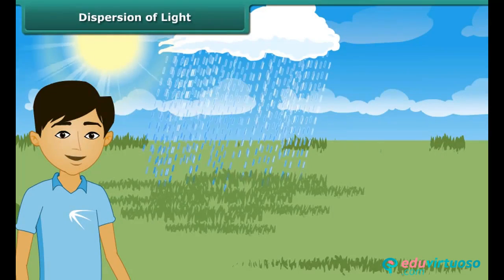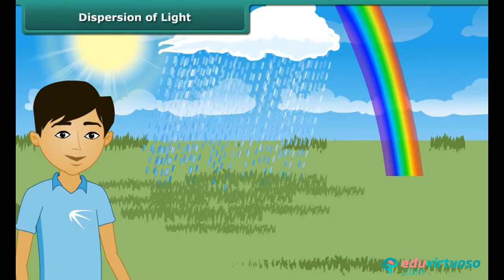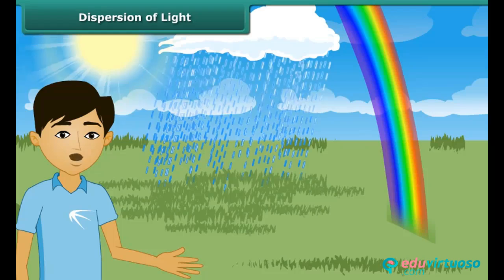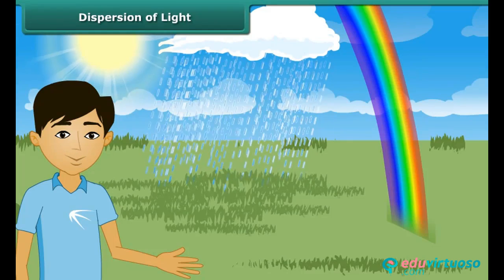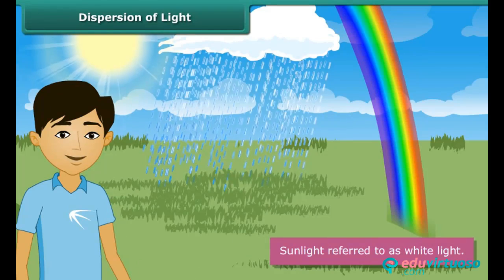What do we observe in the sky after rainfall? We know that the sunlight is referred to as white light.